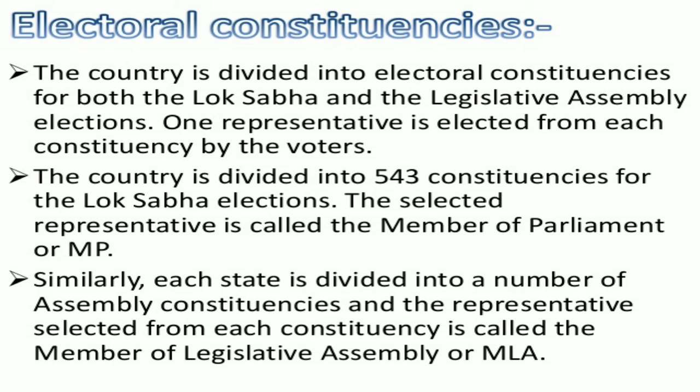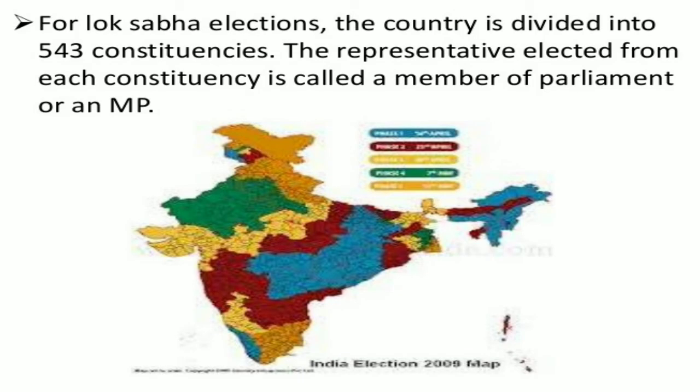The selected representative is called the member of parliament or MP. Similarly, each state is divided into a number of assembly constituencies and the representative selected from each constituency is called the member of legislative assembly, or MLA. You can see the 543 Lok Sabha constituencies on the map here.